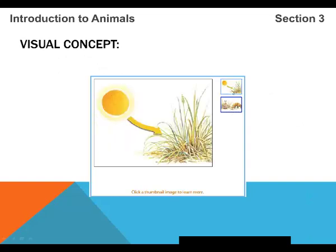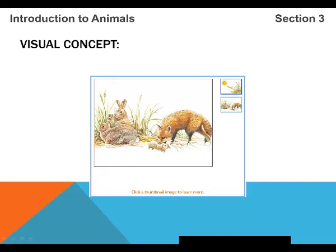Autotrophs are organisms that obtain energy by making their own food. Most autotrophs, such as plants, use sunlight as their source of energy. Other autotrophs use chemicals in their environment. Heterotrophs are organisms that must take in food to meet their energy needs. Rabbits eat plants to meet their energy needs; foxes eat rabbits for the same reason.